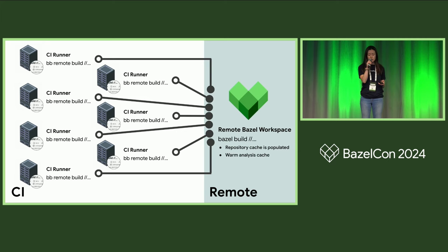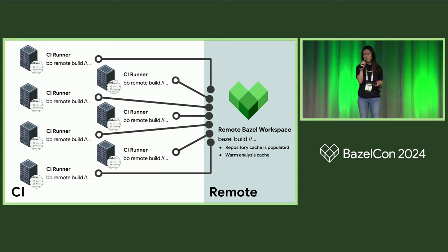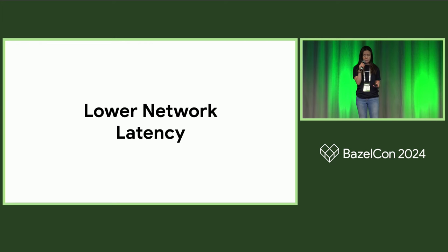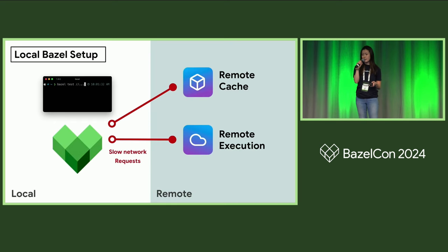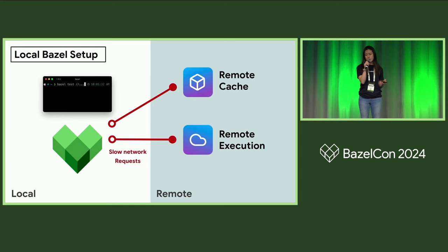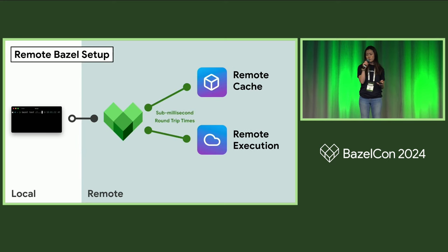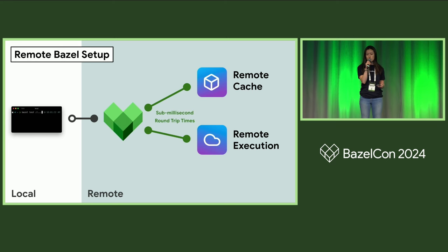On Linux and with Firecracker, we store these workspaces in a remote cache, so incoming CI workloads don't have to wait for a workspace to open up — we can dynamically spin up a warm workspace with autoscaling. Remote Bazel also helps decrease network latency. Bazel's remote APIs make a lot of sequential network requests, and network latency ends up being one of the biggest bottlenecks in a lot of remote cache and RBE setups. With Remote Bazel, we're co-locating the Bazel server in the same data center as our remote cache and execution servers, so we can see sub-millisecond round trip times, which makes overall builds faster.